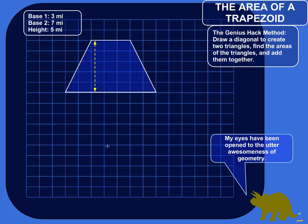I want to show you a cool way of figuring out the area of a trapezoid. You could calculate the area using the area formula for trapezoids — just plug in the numbers and you're done. But this is a cool way that involves some slightly creative thinking, so this should be pretty fun.